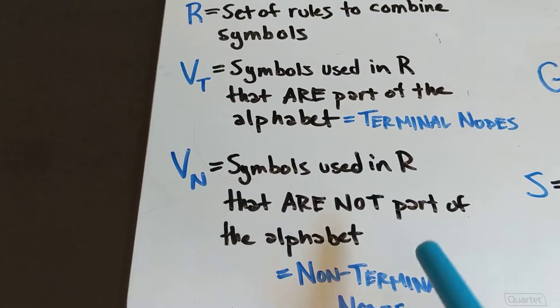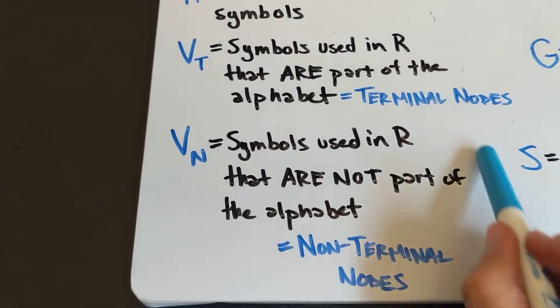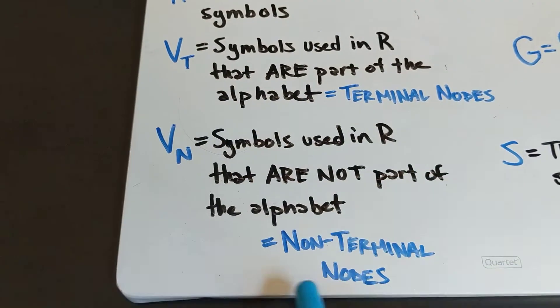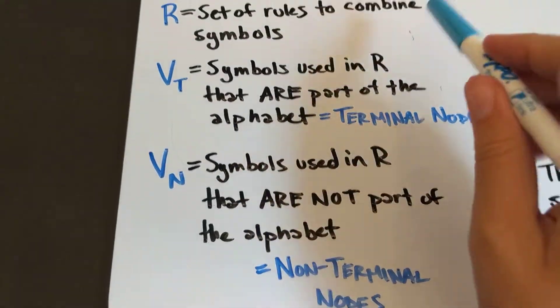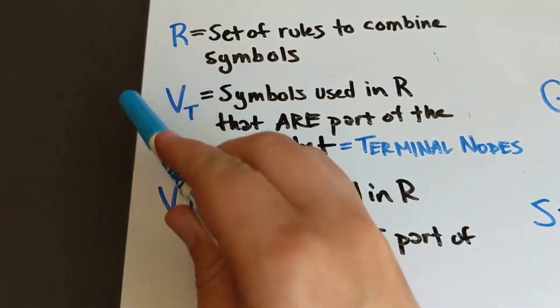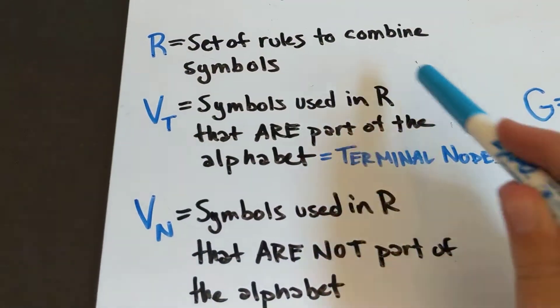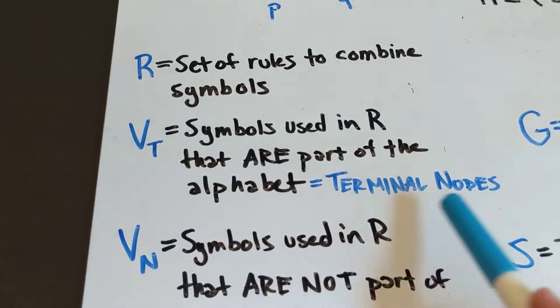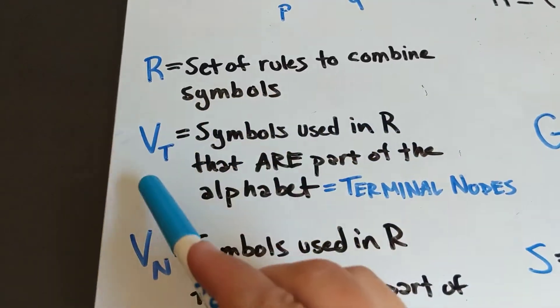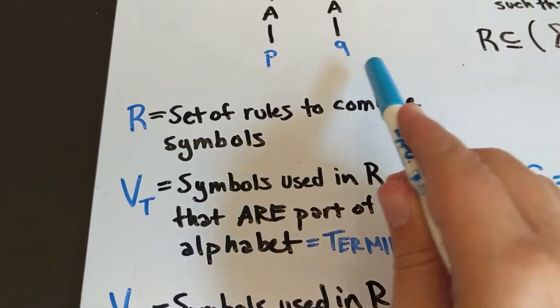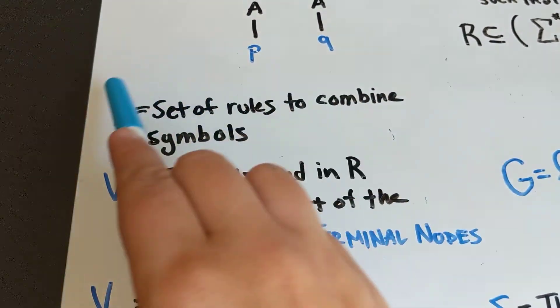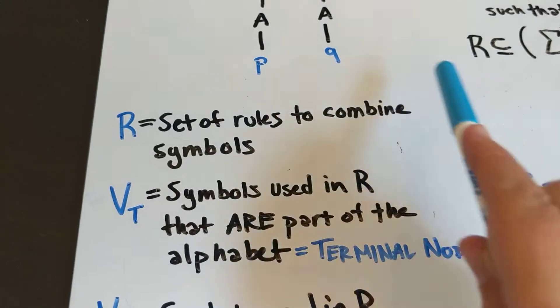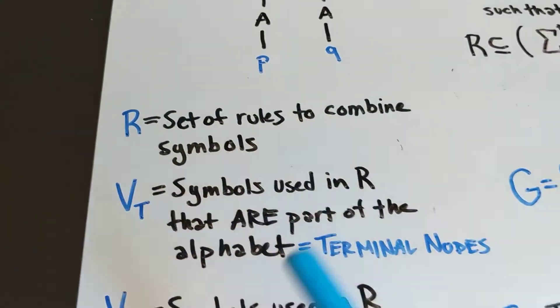We need to specify what these two sets are. You can think of the non-terminal nodes as the set of gears inside your machine, and the terminal nodes are the set of pieces that get spewed out of your machine in different orders. That is how we make our machine work.